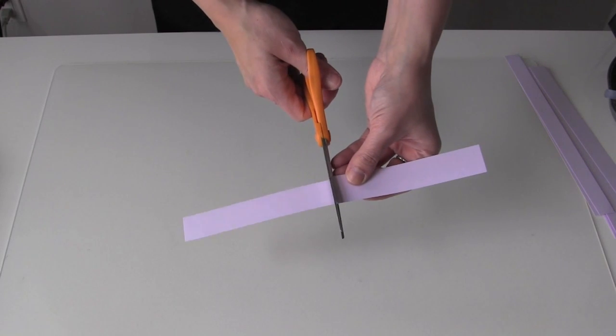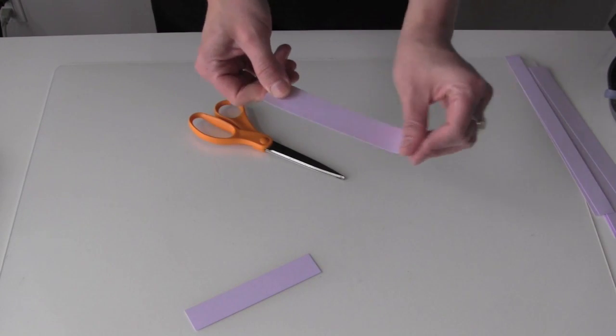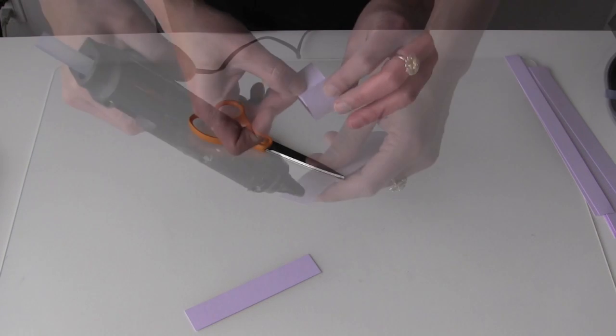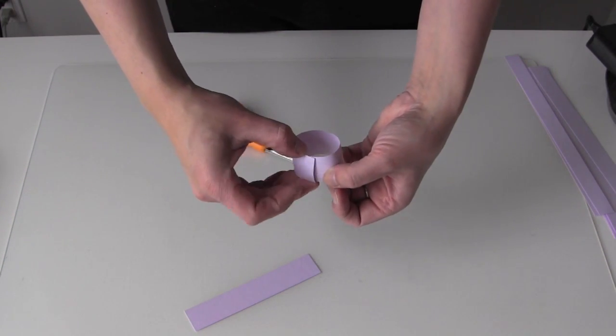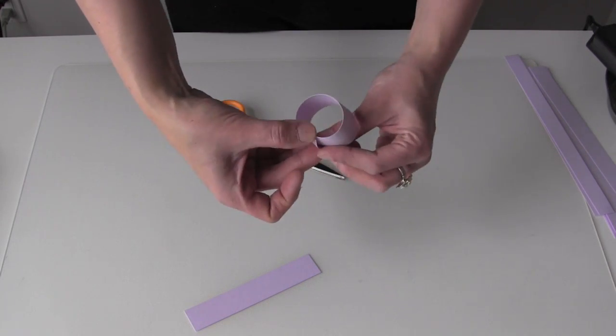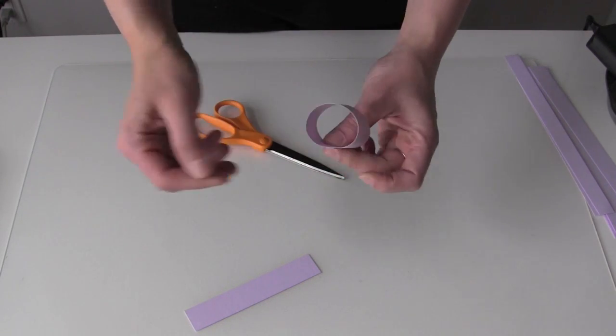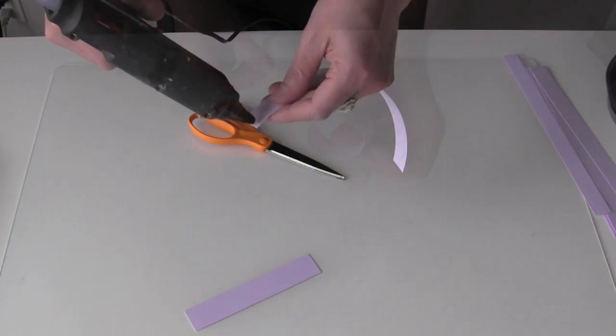The first shape we're going to make is just a basic circle. So you'll cut the paper in half for this. And we're going to hot glue on the end and put it together like that. I always run my fingers along the edge of the paper to put a curl in it so it will curl easier.